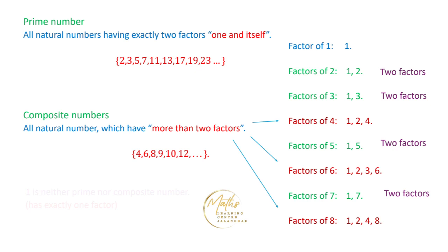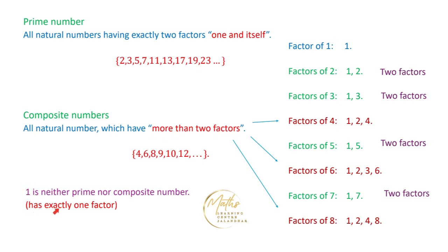An interesting thing to note is that the number 1 has exactly one factor. Because of this, 1 is neither a prime number nor a composite number — prime numbers have exactly 2 factors and composite numbers have more than 2, but 1 has exactly 1 factor.